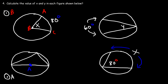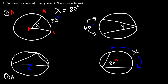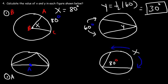Problem 4: Calculate x and y in each figure. Top left: B is the center of the circle, so x equals the measure of arc AC — x equals 80 degrees. Top right: the inscribed angle is half the intercepted arc, so y equals one half of 60, which is 30 degrees. Third figure: the intercepted arc is twice the inscribed angle, so x equals 2 times 80, which is 160 degrees.